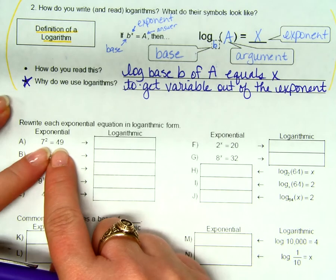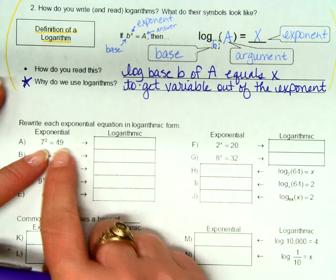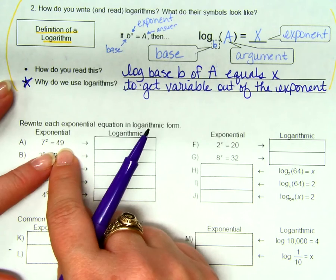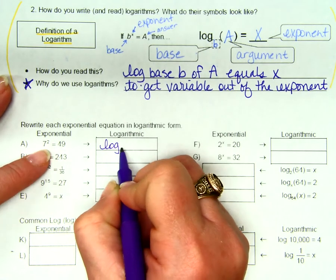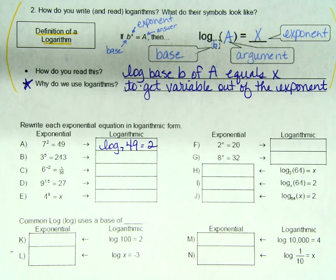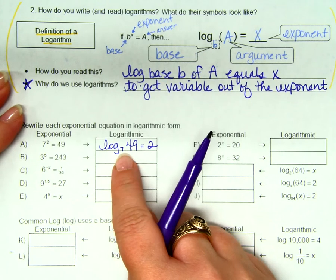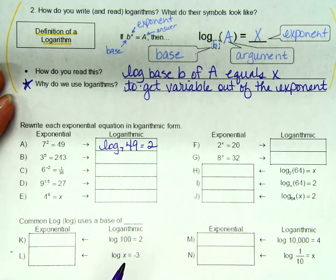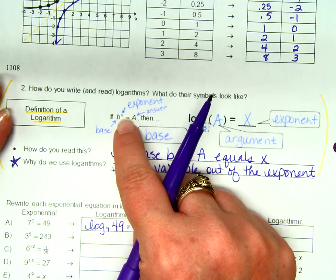We still don't know 2 to what power equals 20, do we? We have a general idea, but now that we have a way to get the variable out of the exponent, we can solve that. We're not going to yet, because we need to practice this a little bit, but we eventually will. Okay? What I need you to be able to do is, I need to be able to give you exponential form, and you give me logarithmic form of the same equation. Okay? Can you do that? So if I tell you 7 squared equals 49, I need you to be able to say log base 7 of 49 equals 2.